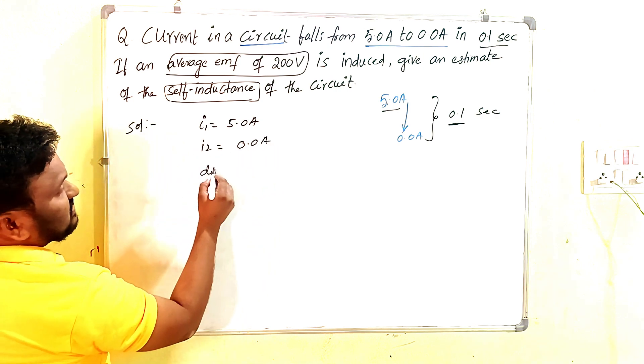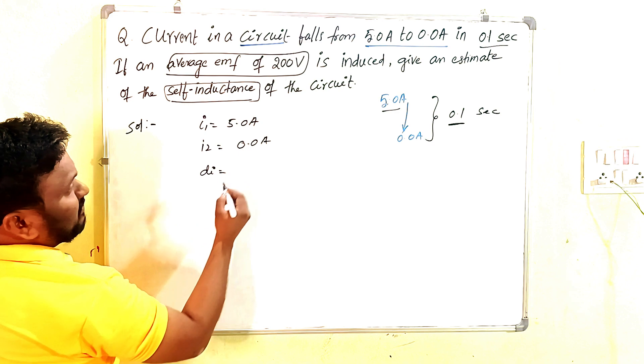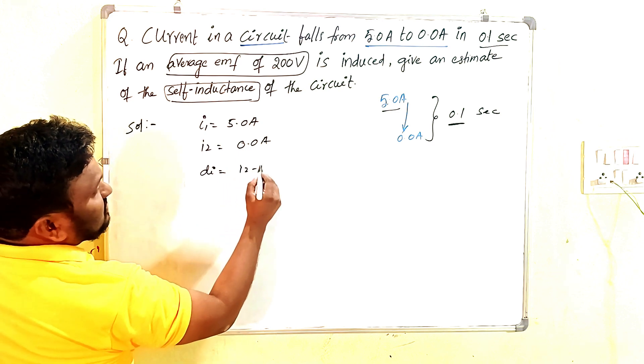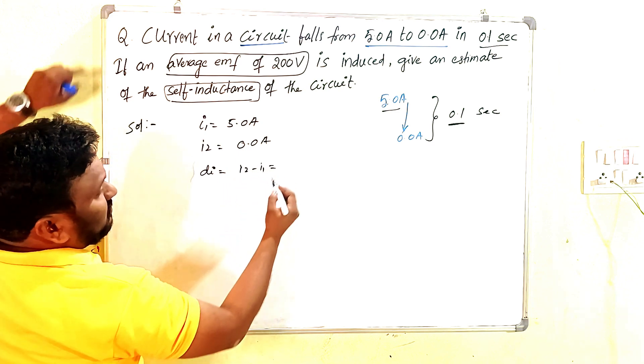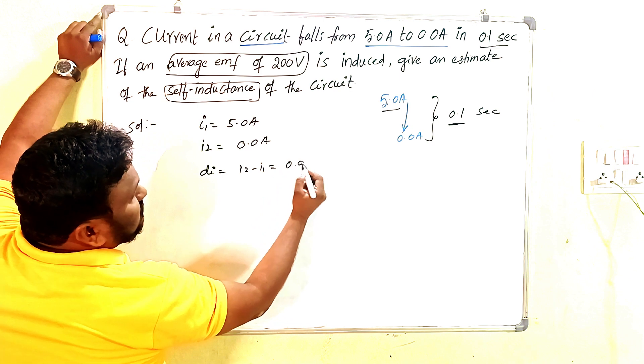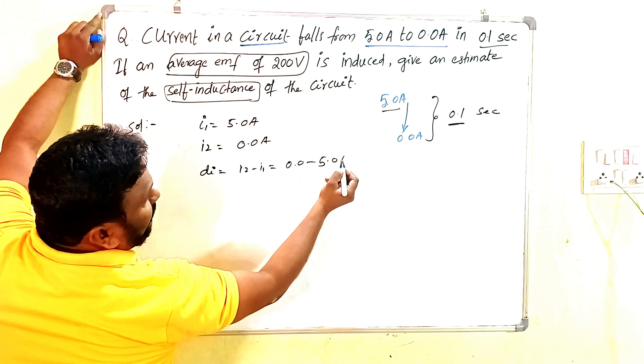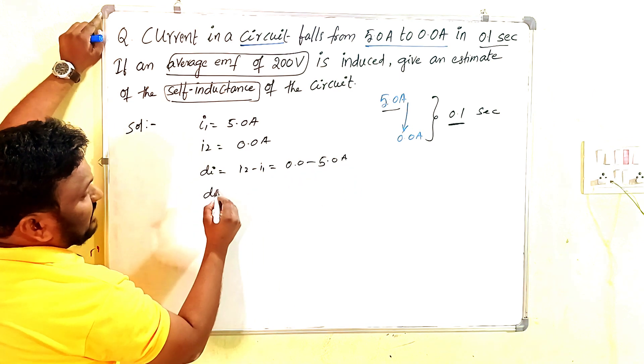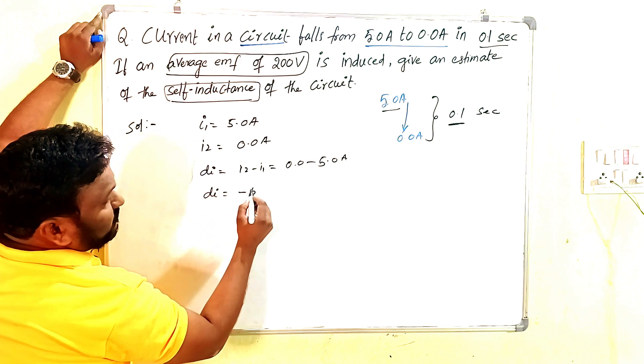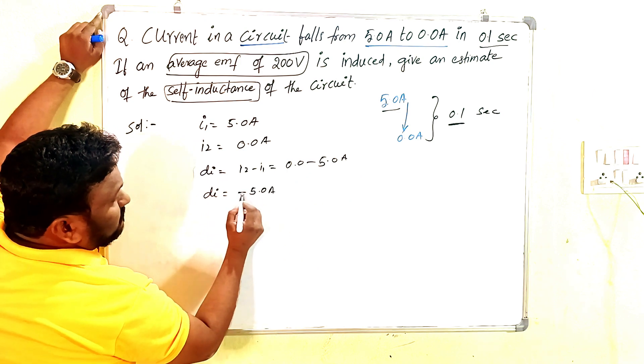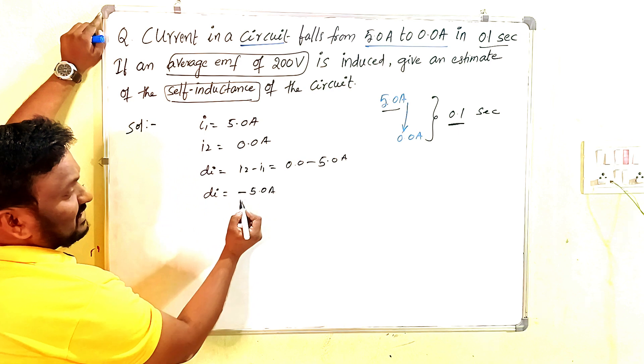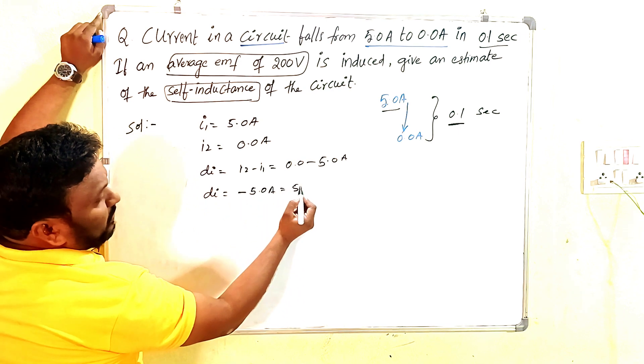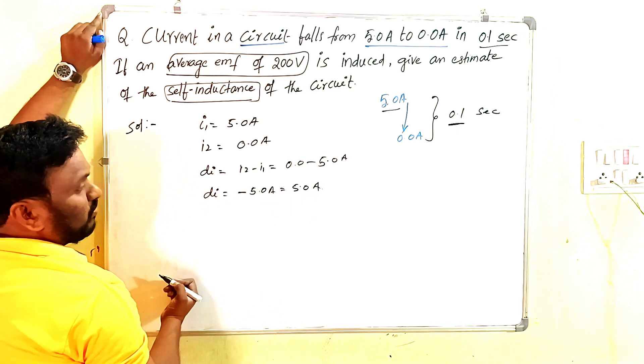Now, the change in current di is i2 minus i1. That means 0.0 amperes minus 5.0 amperes, so di equals -5.0 amperes. If you take the magnitude only, it's 5.0 amperes.